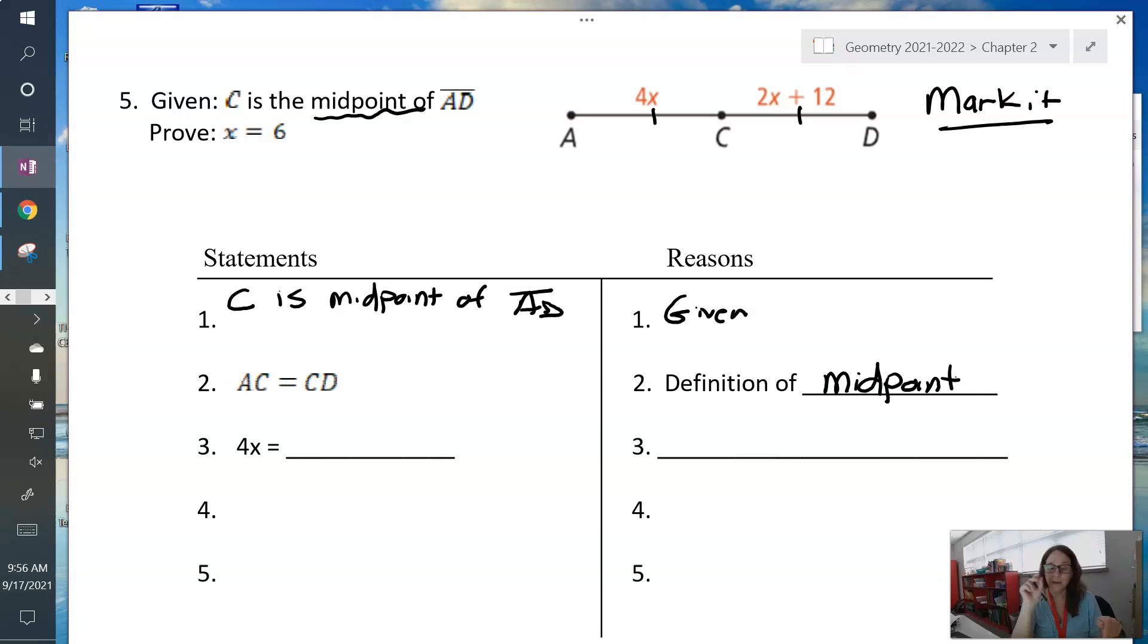So we have AC equals CD. That's your definition of midpoint. Because C is the middle, that means AC and CD are the same thing, which means they're marked the same. They are the same. So AC equals CD, or 4x equals 2x plus 12. And right here, where did that come from? That's your definition of midpoint. You could also use substitution. I'm going to use substitution because what's in the picture is also given.